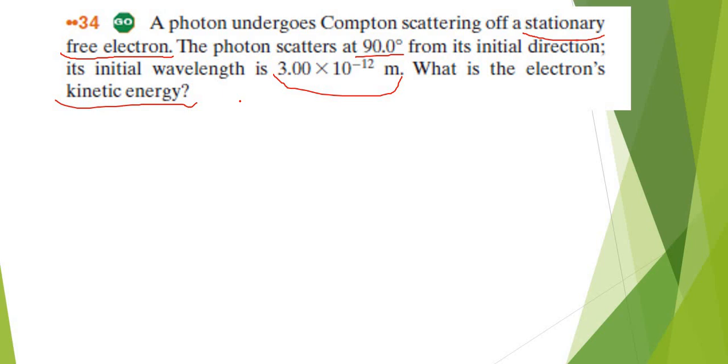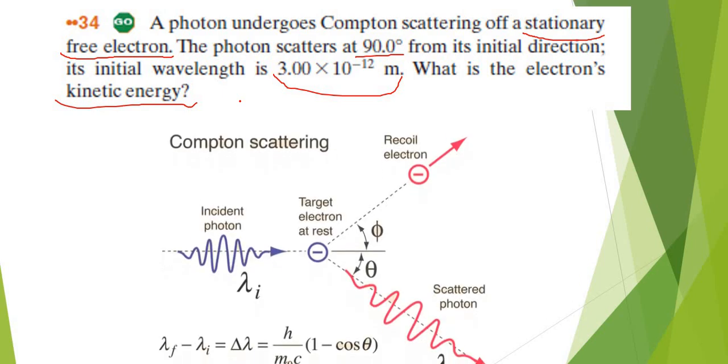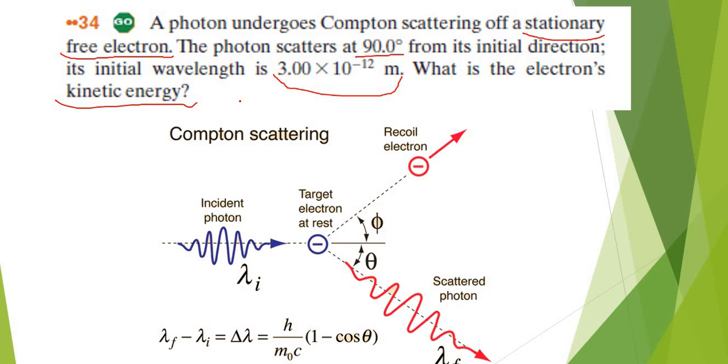It wants us to find the kinetic energy, but without some of the information you can't directly find the kinetic energy. So this is basically the Compton scattering process. It has the incident photon with lambda I, and this is the theta here from this question. You have to bear in mind that this is the theta here.